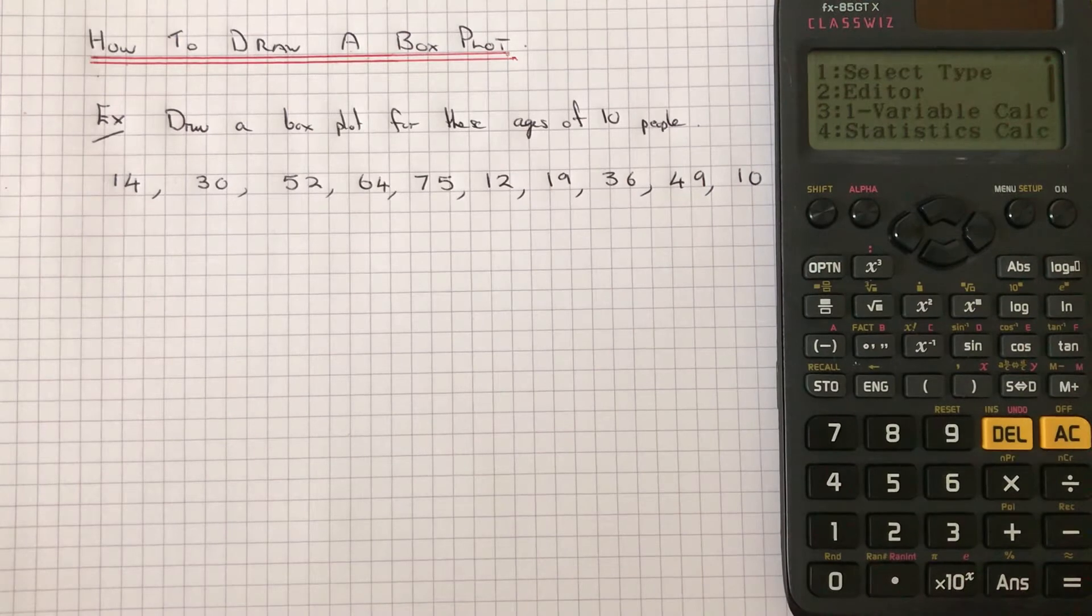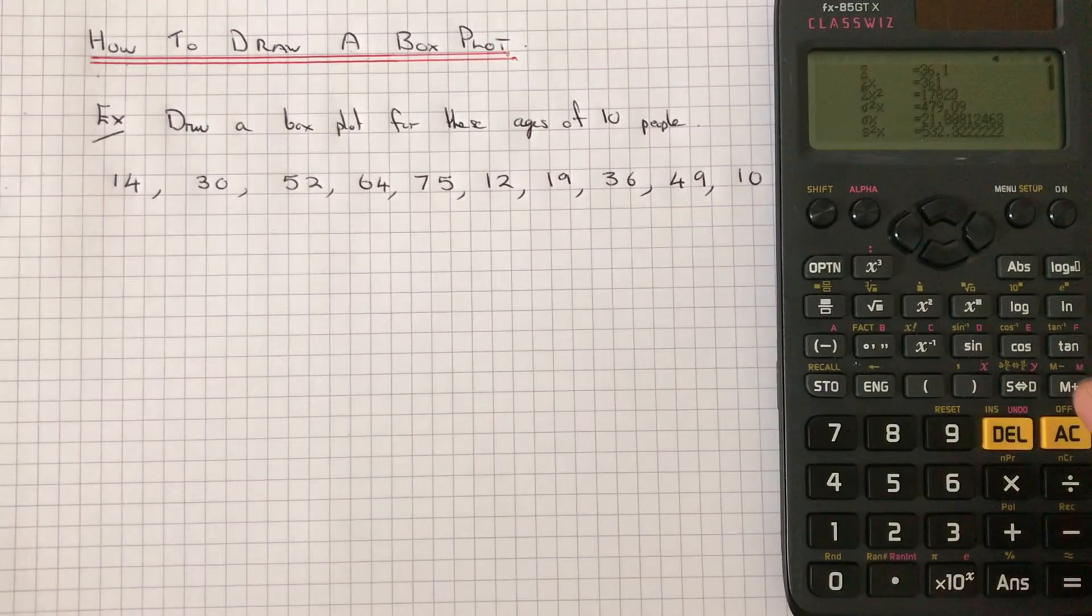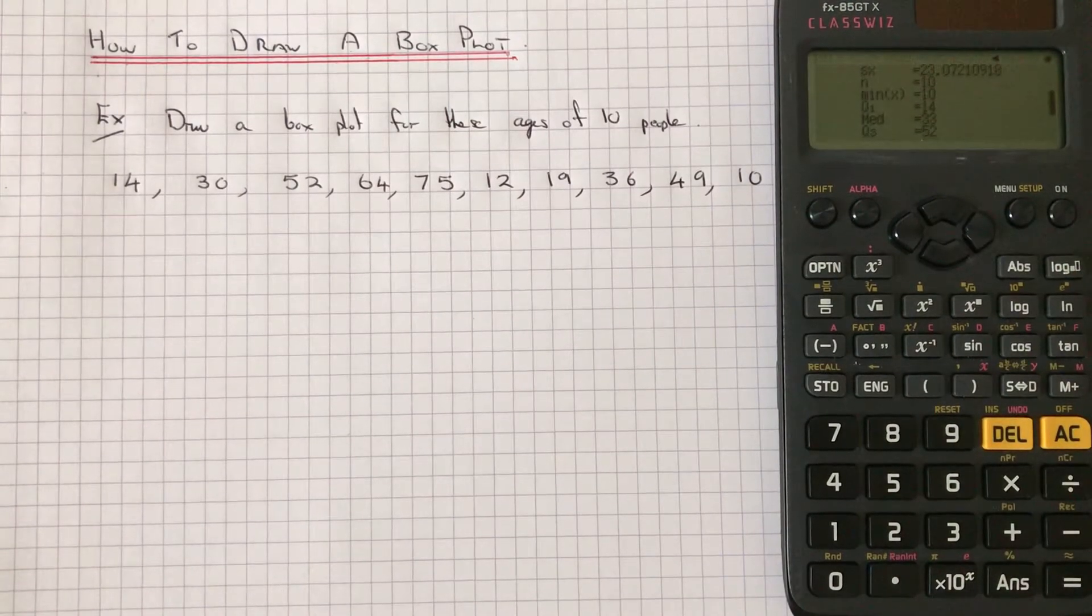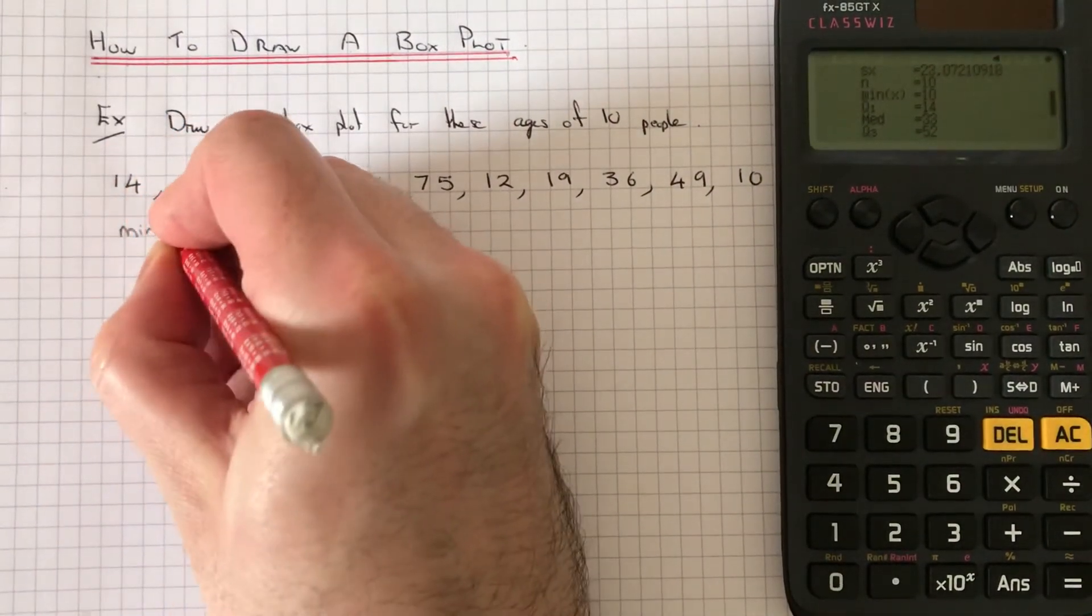So once your data is typed in, press option and select number 3 and if we scroll down to our second page, we have got the values which we need. So we've got the minimum value, which is 10.